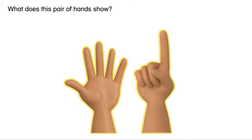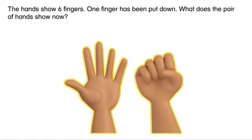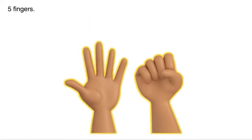What does this pair of hands show? The hands show six fingers. One finger has been put down. What does the pair of hands show now? Five fingers.